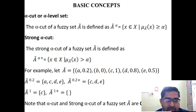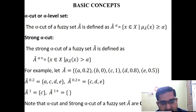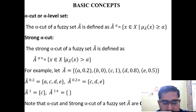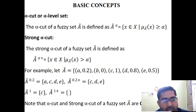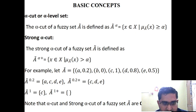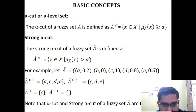A is a Fuzzy Set: A = {(a, 0.2), (b, 0), (c, 1), (d, 0.8), (e, 0.5)}. In this example, alpha represents the membership value. Suppose we consider alpha = 0.2. So for A at alpha = 0.2, from the definition of alpha cut, if we want to put any element in the alpha cut, the membership value should be greater than or equal to 0.2. In that sense, elements a, c, d, and e qualify.